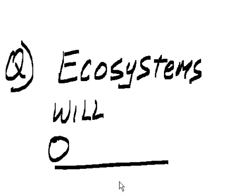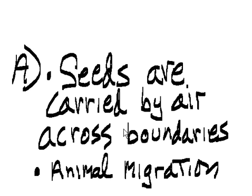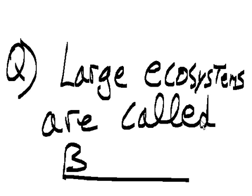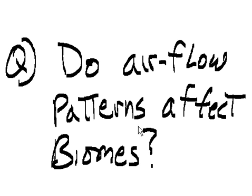An ecosystem will overlap because seeds are carried by air across boundaries, and animals can migrate. Can animals belong to more than one ecosystem? Yes. Large ecosystems are called biomes. Do air flow patterns affect biomes? Yes.